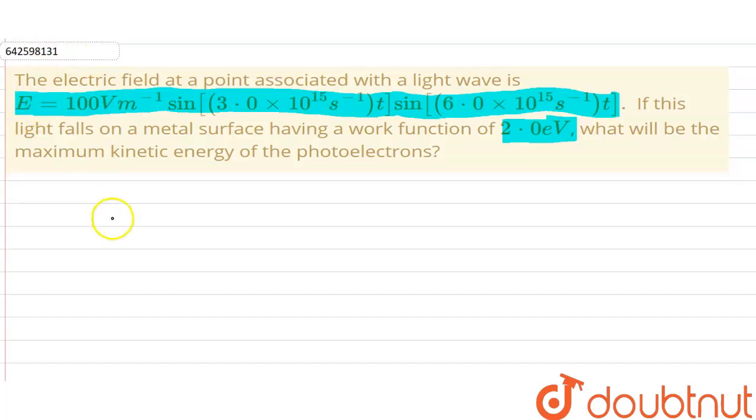Okay, so we have to find the maximum kinetic energy of the photoelectron. The relation of maximum kinetic energy from the Einstein photoelectric equation is h nu minus phi. Where nu is the frequency, so if we can find the frequency, we can get the maximum kinetic energy.